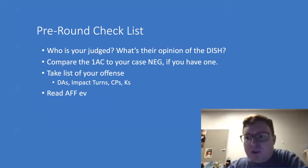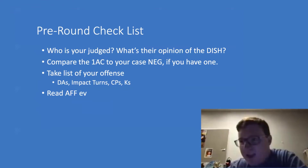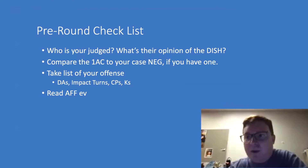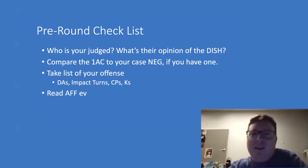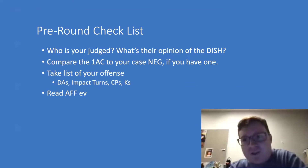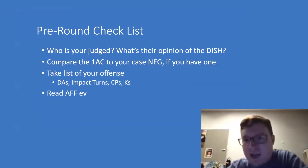Most judges are fine with conditionality. There are some judges — like myself and a few other lab leaders — who are very neg-leaning on conditionality, but typically you can find that out in their judge philosophy. So you want to know how much fiat you can get away with right off the start. The second thing you should do, after checking the judge, is compare the 1AC to your case neg if you have one. If you have a case neg, that's great. If you don't — and this happens a lot, it happened on the CGR topic and it's going to happen on the water topic.